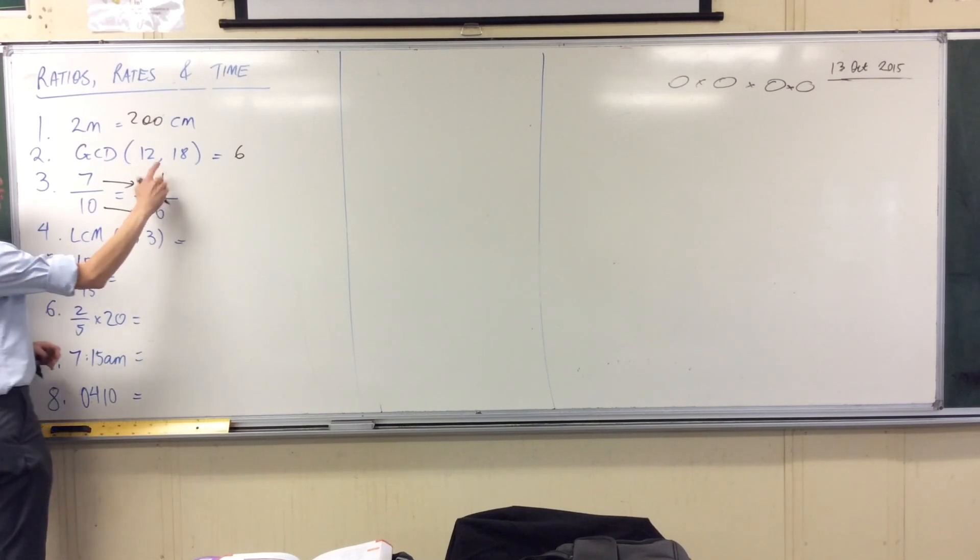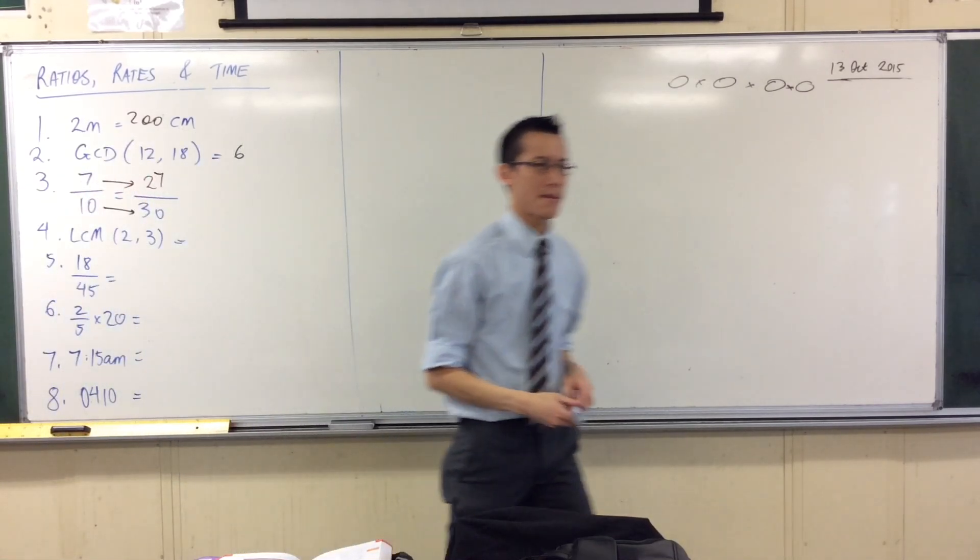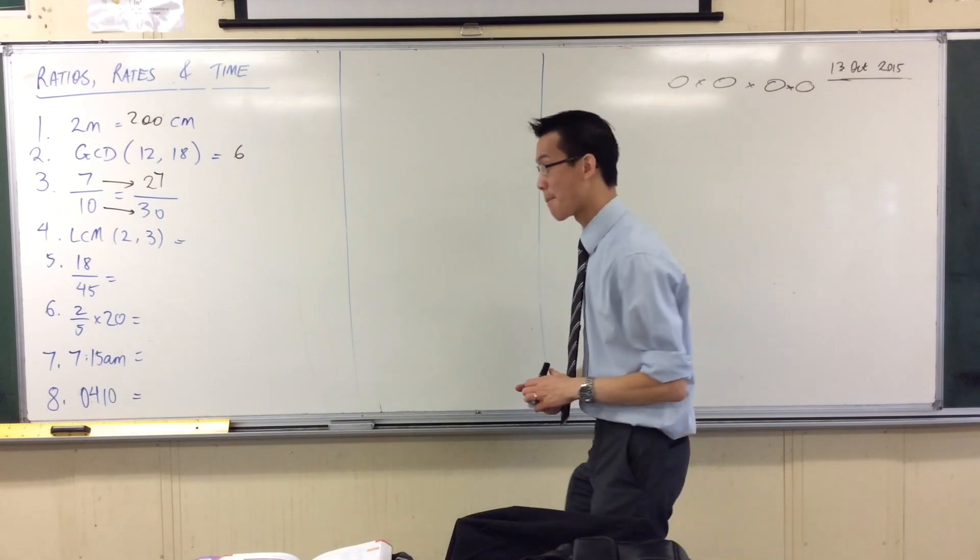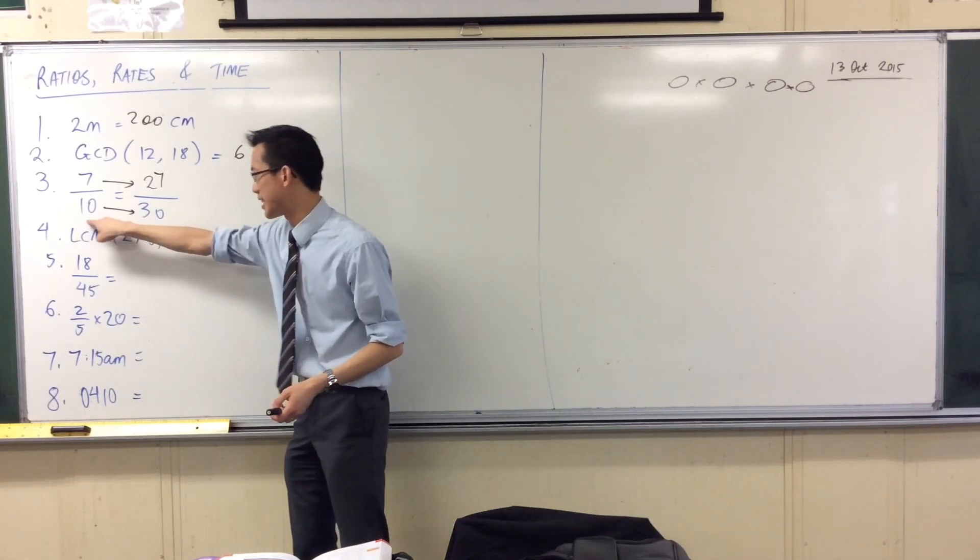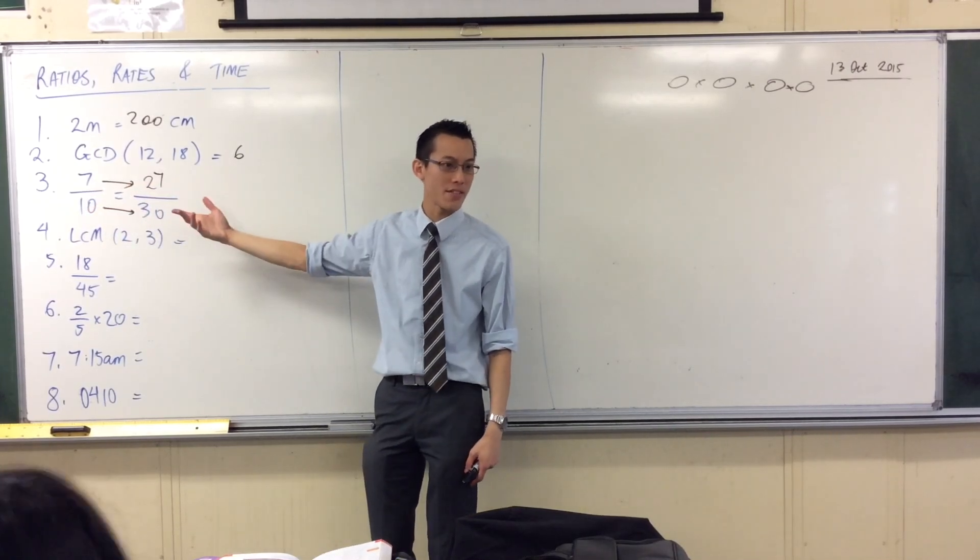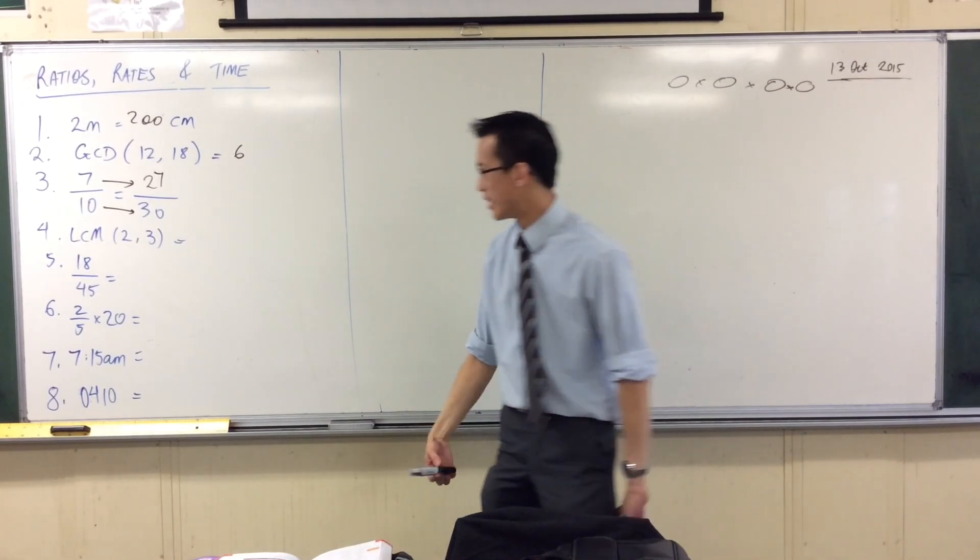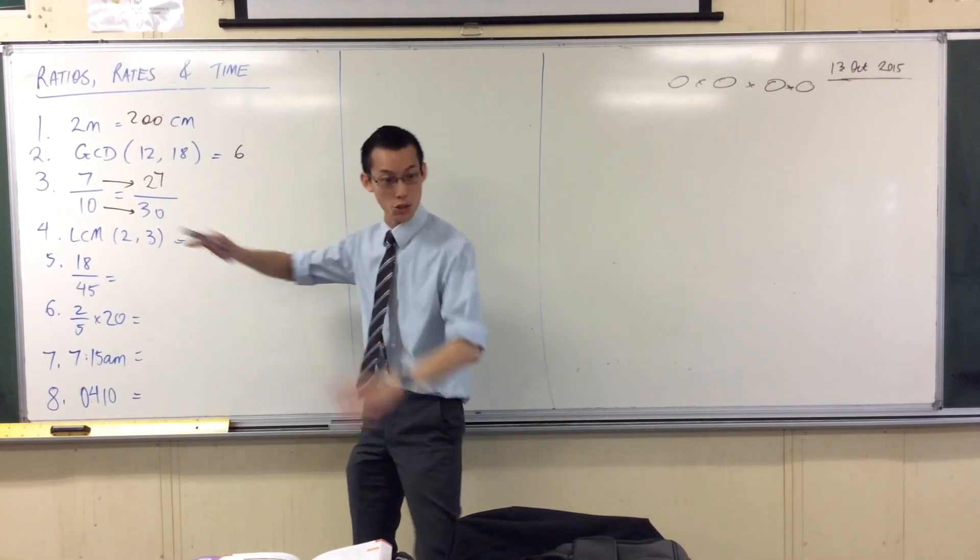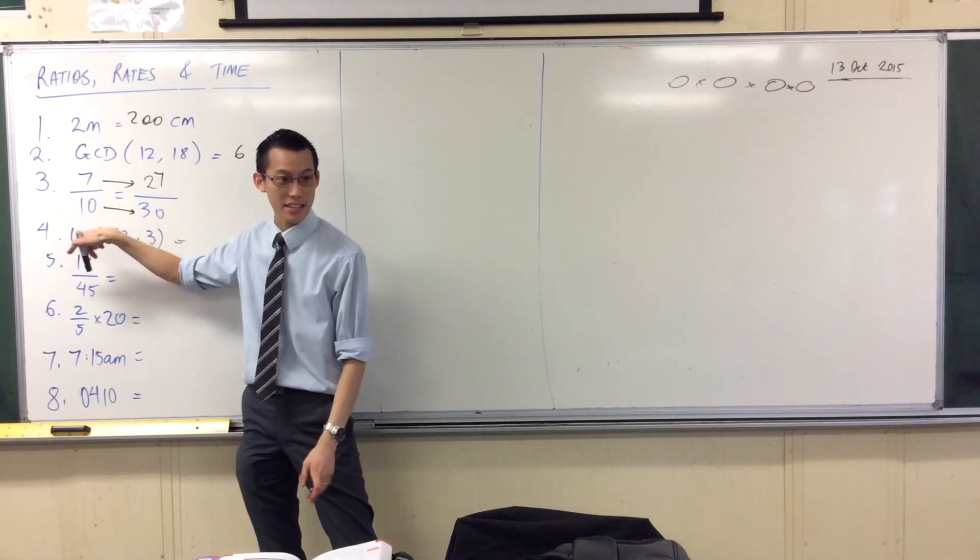Like for instance, a common error is to answer 27. That's a very common error to make. How did I make that error? I added instead of multiplying. So 10, you add 20 to get to 30, so how about I add 20 to get to 27? Why is that a problem? Because it's a completely different fraction. Like you can check, 27 out of 30 is quite a lot more than 7 out of 10.